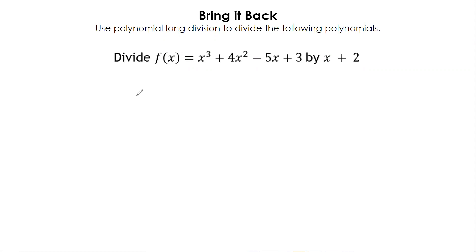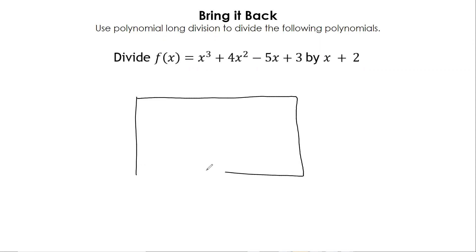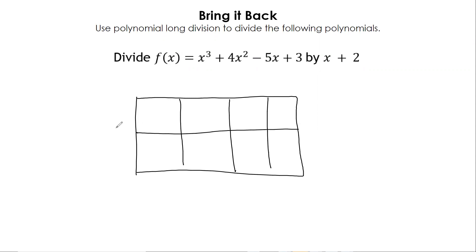We've got four terms up here so that means we're going to have four columns and two rows because we're dividing by two things. We're going to put that x plus two on the outside, and then we've got x to the third — we're going to put it in this box right here. Then we're going to ask ourselves what times x will give me x to the third.